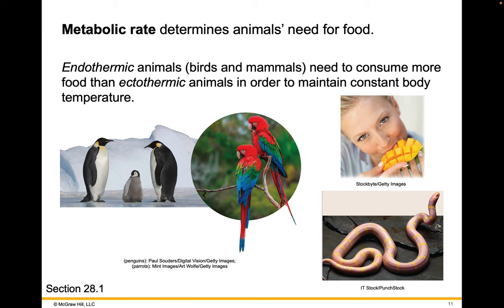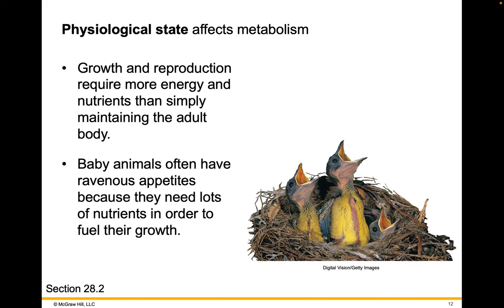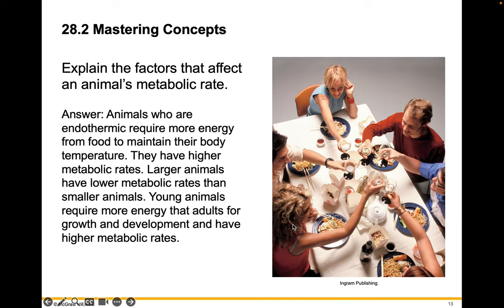Metabolic rate determines an animal's need for food. Endothermic animals, like birds and mammals, need to consume more food than ectothermic animals in order to maintain their constant body temperature. The physiological state also affects metabolism. Growth and reproduction require more energy and nutrients than simply maintaining an adult body. Baby animals often have ravenous appetites because they need lots of nutrients to fuel their growth. Take a moment and explain the factors that affect an animal's metabolic rate in your own words.